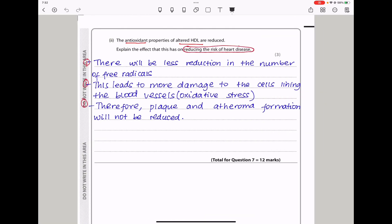Here they say the antioxidant properties of altered HDL are reduced. Explain the effect that this has on reducing the risk of heart disease. We know that antioxidants are good at removing free radicals that could cause oxidative stress. And this oxidative stress, if it occurs in the blood vessels, could lead to plaque or atheroma formation. There will be less reduction in the number of free radicals. This leads to more damage to the cells lining the blood vessels, which is oxidative stress. Therefore, plaque and atheroma formation will not be reduced. So this brings us to the end of question 7.